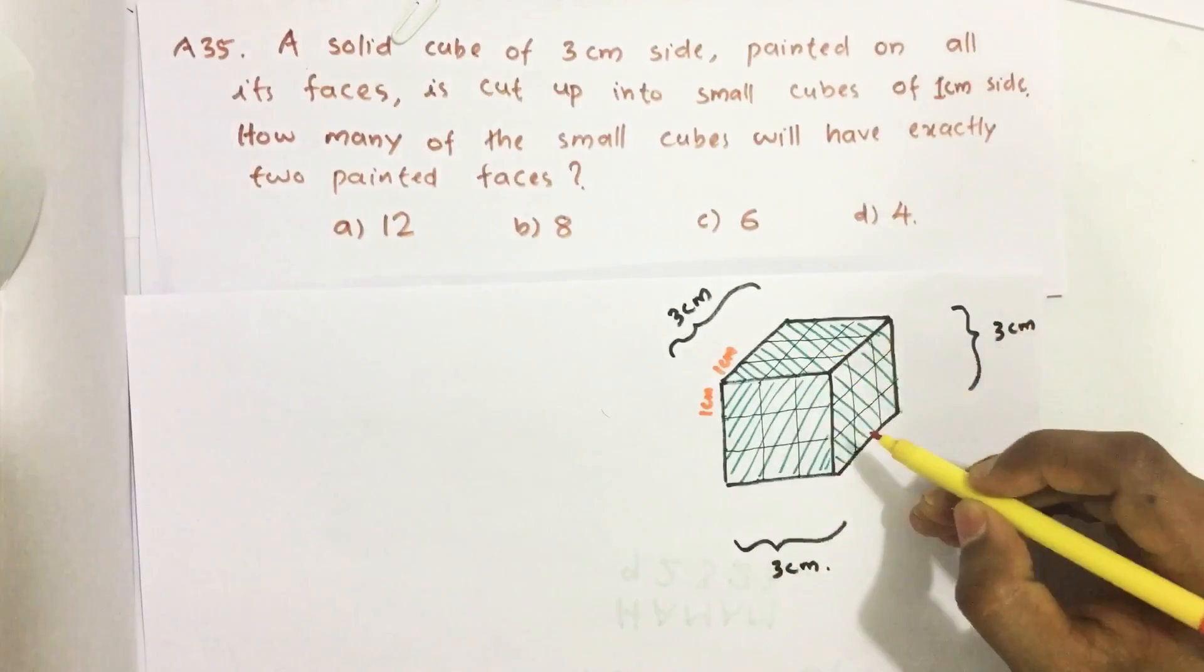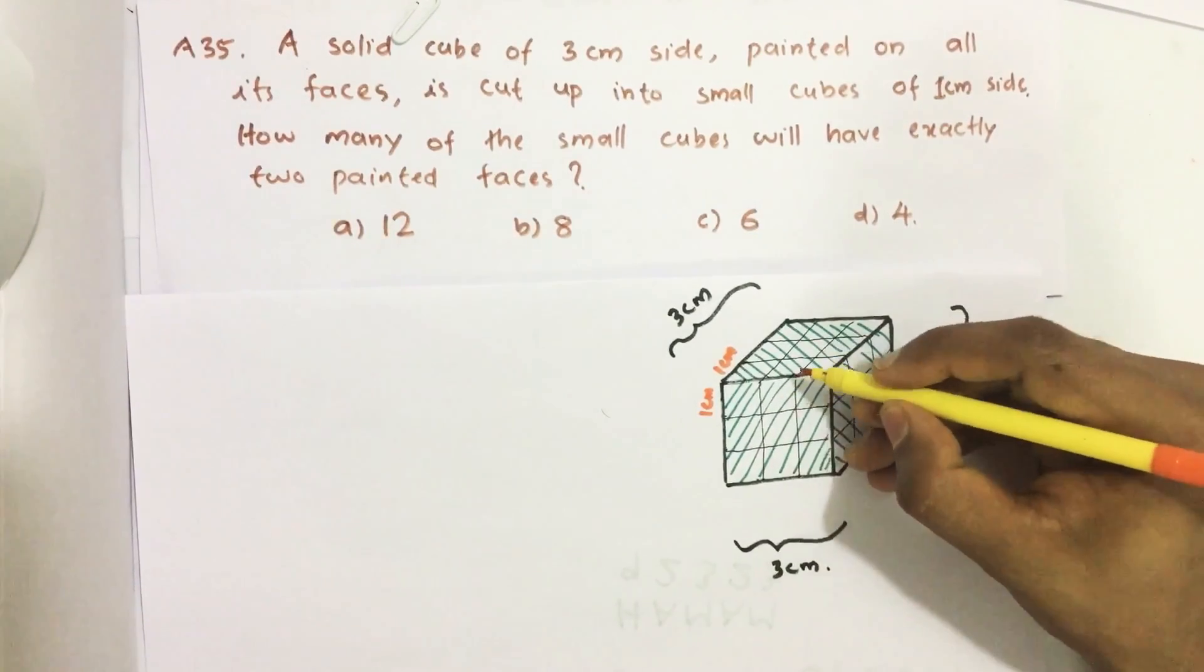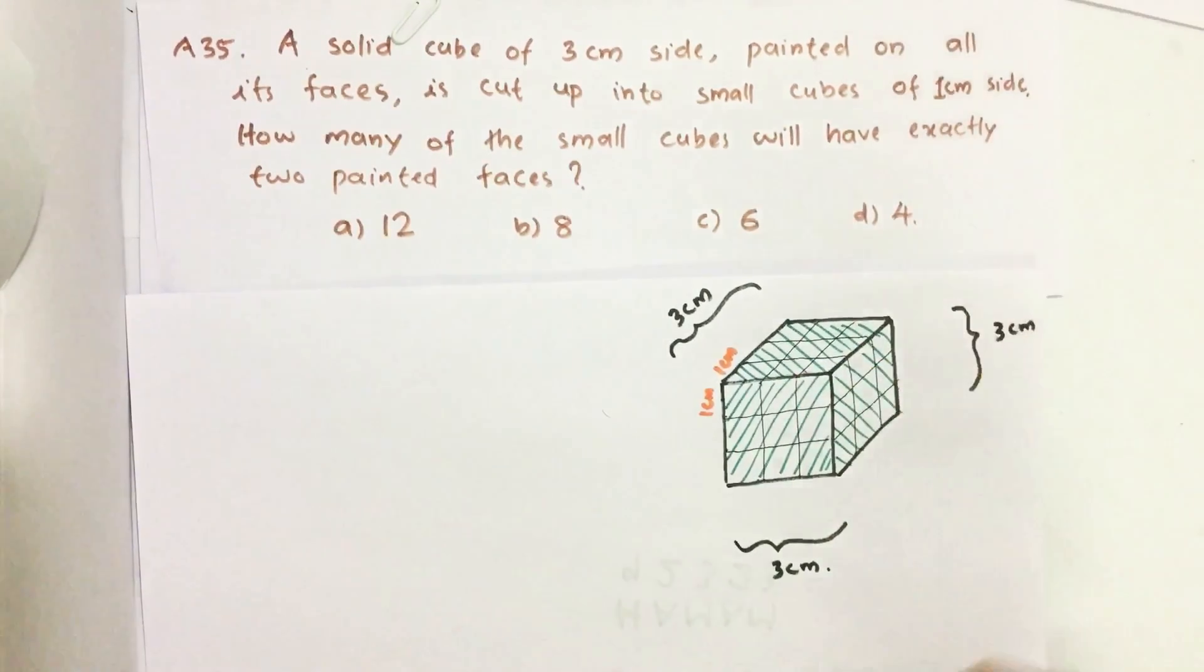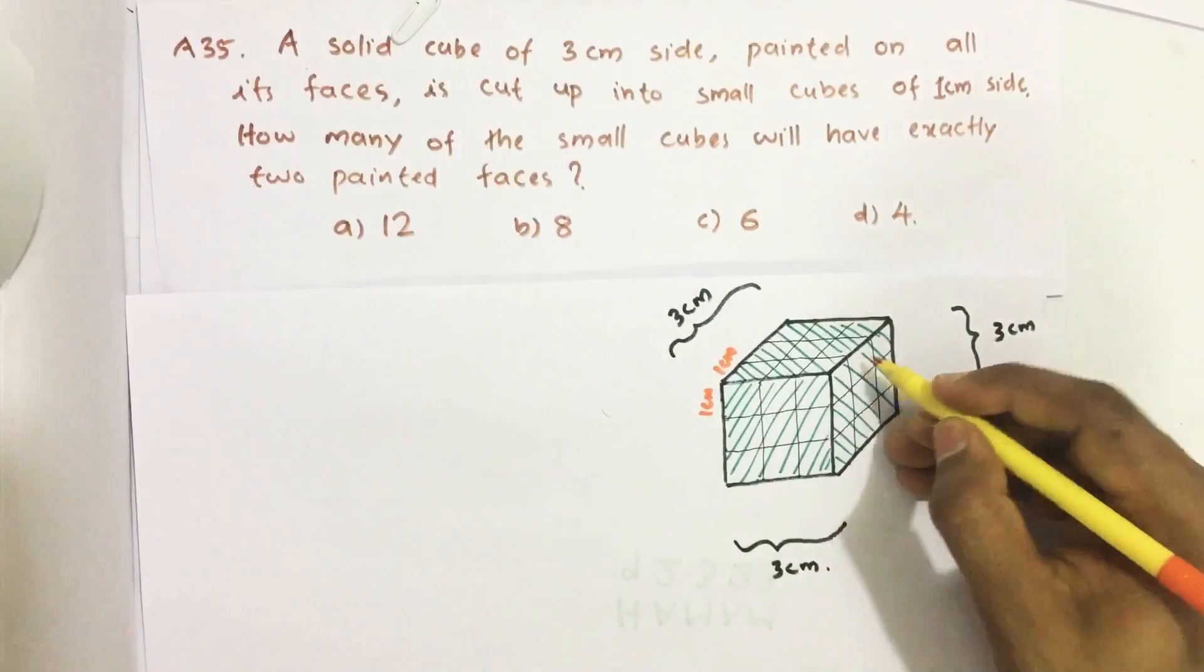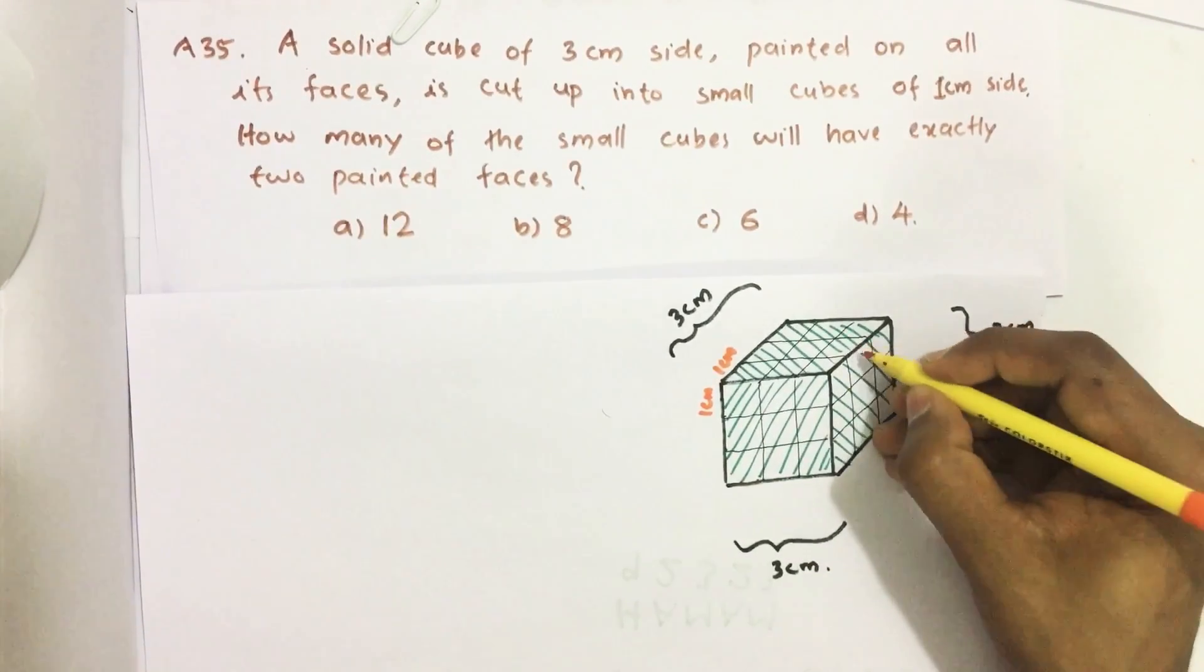So here in this picture we can see those small cubes which are in the middle of these edges have a small cube with 2 faces painted.